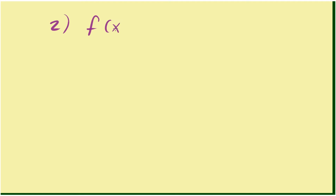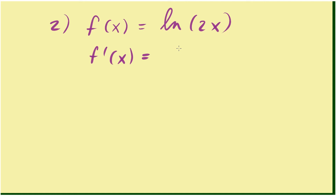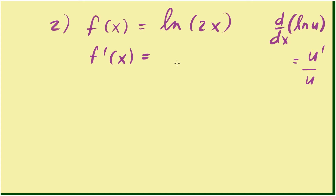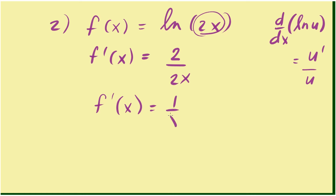Now suppose we are finding the derivative of natural log of 2x. The formula for finding the derivative of natural log of u is u prime over u. So first we get the derivative of 2x, which is 2 — that's the u prime — divided by u, which is that same 2x. And that reduces to 1 over x.